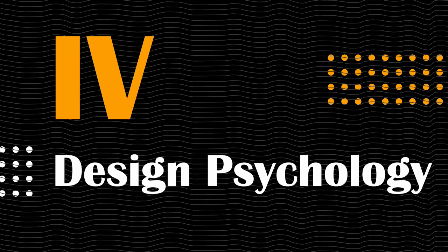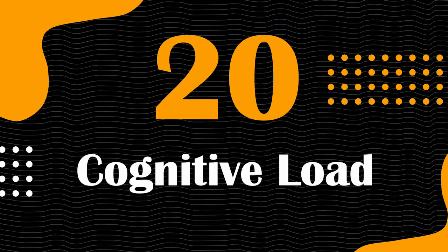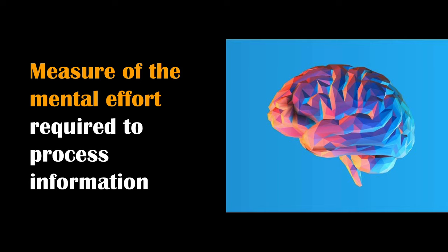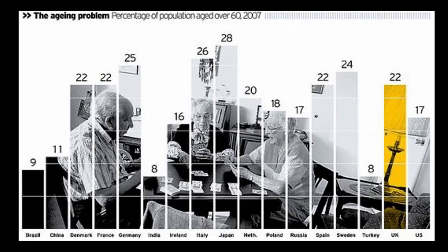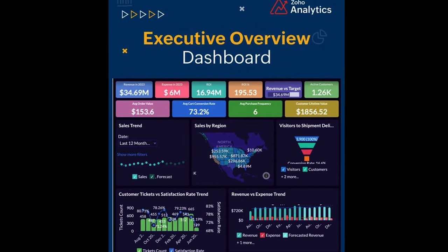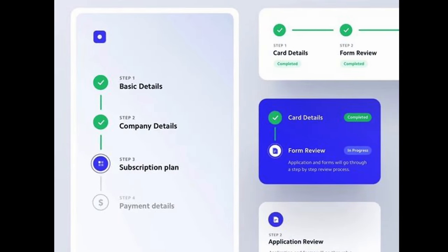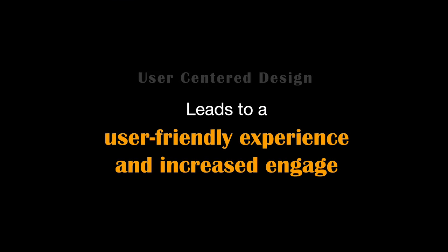The next section is Design Psychology. Our opening term is Cognitive Load — the measure of the mental effort required to process information. In design, it's crucial to manage cognitive load efficiently. By simplifying complex information and organizing content logically, designers reduce the mental strain on users, making it easier to engage with and comprehend the content. For example, in a mobile app, minimizing the number of steps required to complete a task or providing clear, concise instructions reduces cognitive load, leading to a more user-friendly experience.